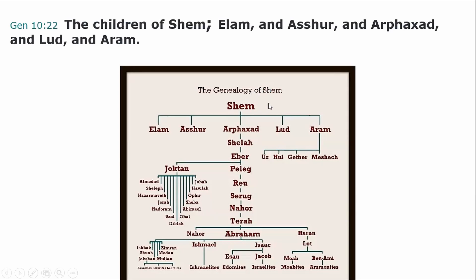You can see on the screen the genealogy of Shem. You see the five brothers. If you were counting Noah that would be one, two Shem, three Arphaxad, all the way down. And you would see Abraham — he would be the 10th generation. But we're going to talk about all of them, briefly talk about each one and what we know about them today and who they are.